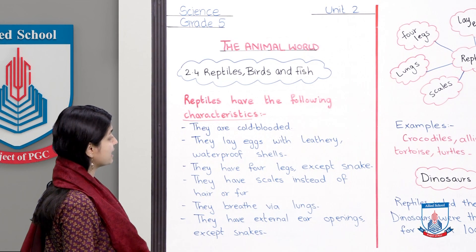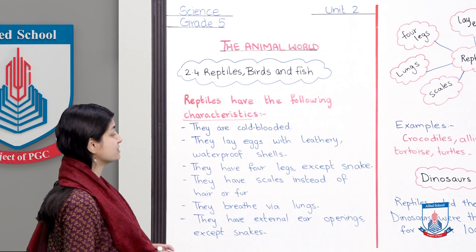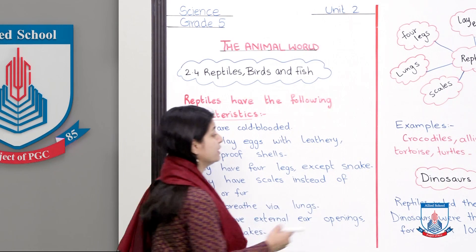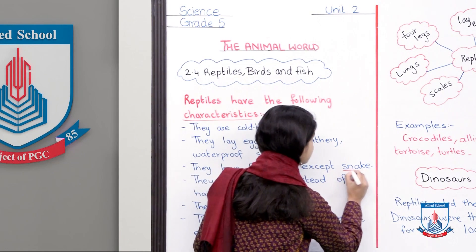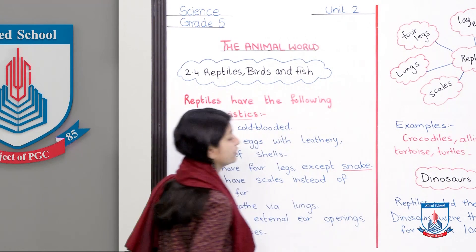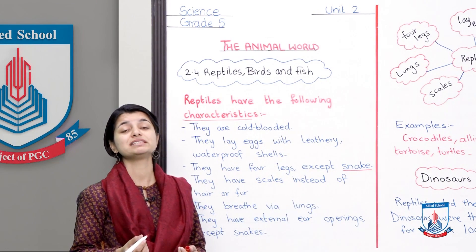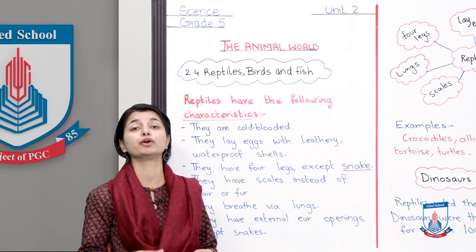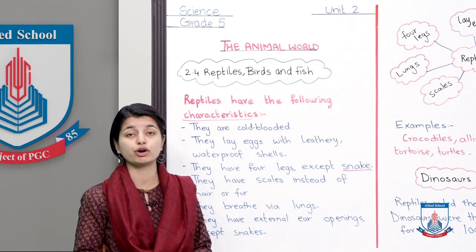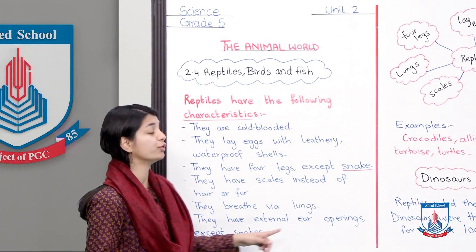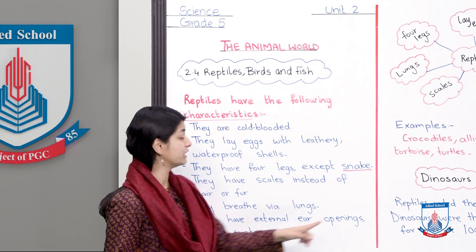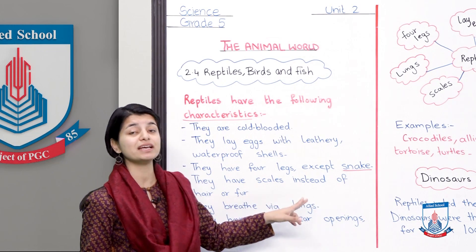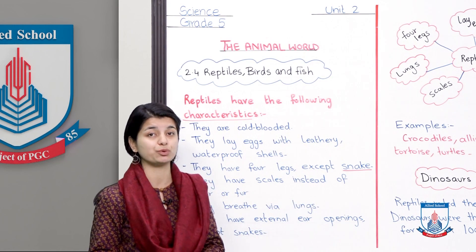They have four legs, except snakes. All reptiles have four legs except snakes, which have none — snakes crawl their body and are more of a creepy-crawly. The rest of the reptiles have at least four legs.